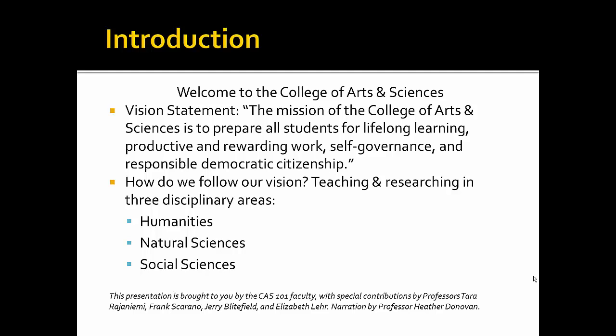The vision of the college is to prepare you for a productive and rewarding career, for independence and self-responsibility, for responsible citizenship in a democratic society, and for lifelong learning beyond your years here. How do we achieve our vision? We teach and research in three major disciplinary areas known as the humanities, natural sciences, and social sciences.